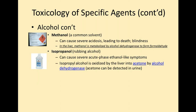Another type of alcohol is methanol. This is a common type of solvent — you'll actually use this in hematology to fix blood cells onto a slide. But in the liver, methanol is metabolized by alcohol dehydrogenase to form formaldehyde. So if you drink this thinking it's going to be like alcohol, it's actually going to turn to formaldehyde inside your body. As you can imagine, that's not ideal.